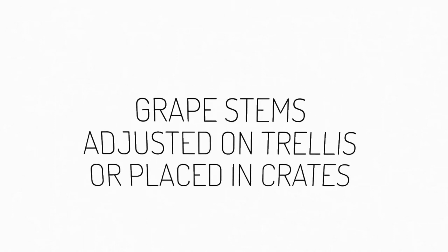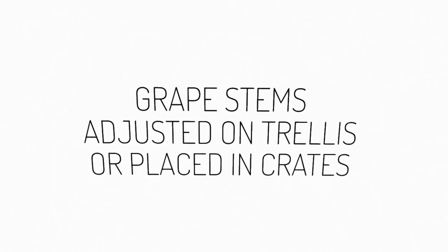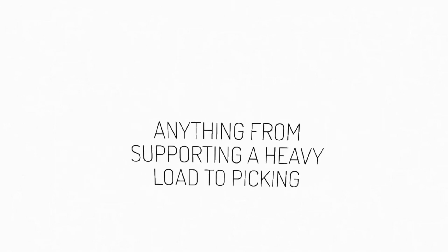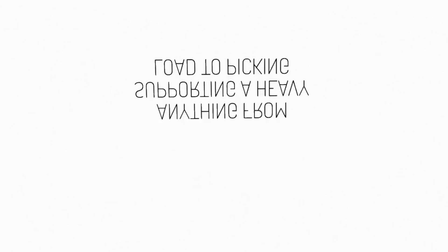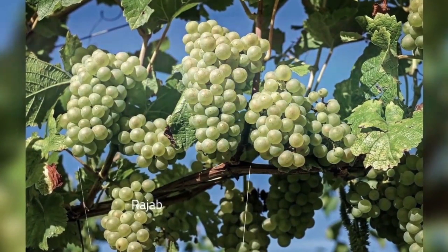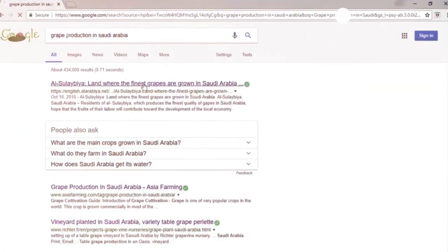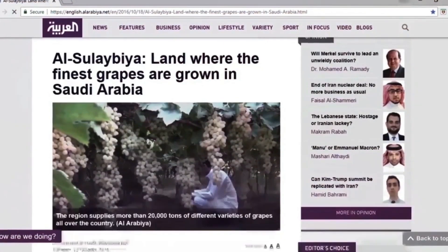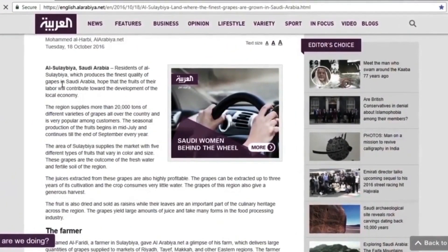Next comes the month of Rajab. One of the definitions of this word is: 'Rujjib al-Karmu: suwiat suruhu wa wudhi'a ma wadi'ahu min al-di'am wal-qilal. Wal-Rujjib: ma bayna al-Zila'i wal-Qassi.' In English, this means adjusting the grape stems and putting them on a trellis or in containers, and the second definition is anything from supporting a heavy load to picking. In other words, Rajab describes the process of grape harvest.